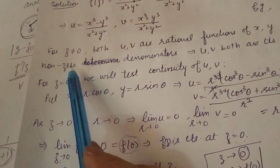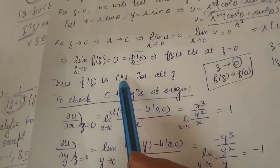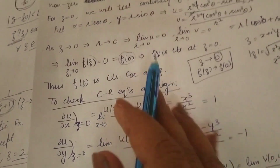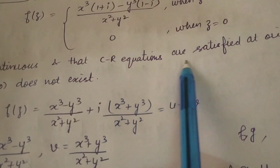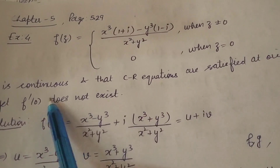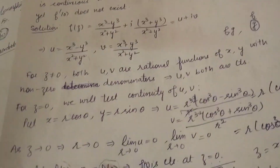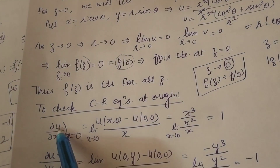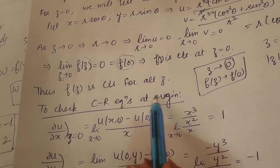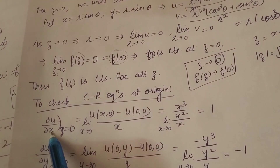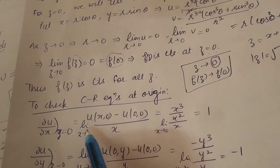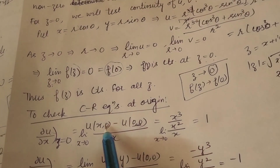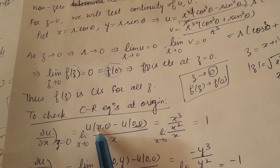The function is continuous at z ≠ 0 and also at z = 0. Therefore, f(z) is continuous for all z. Now we will check the CR equations. We need to verify that the CR equations are satisfied at the origin, and that f'(0) does not exist. We start by finding ∂u/∂x at z = 0. Since we are checking at the origin (0, 0), we apply the limit definition with respect to x.